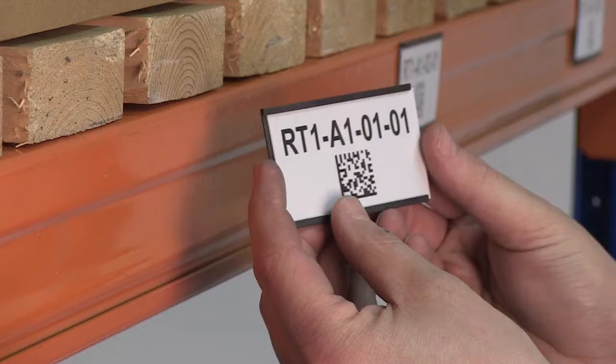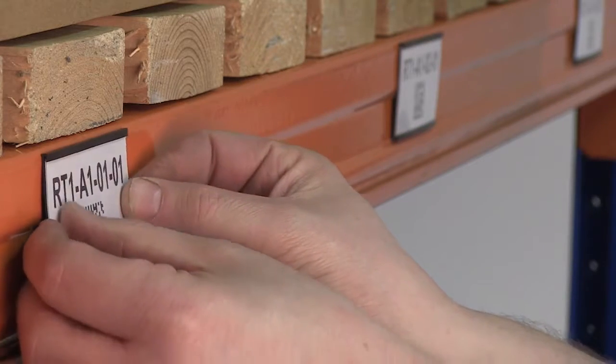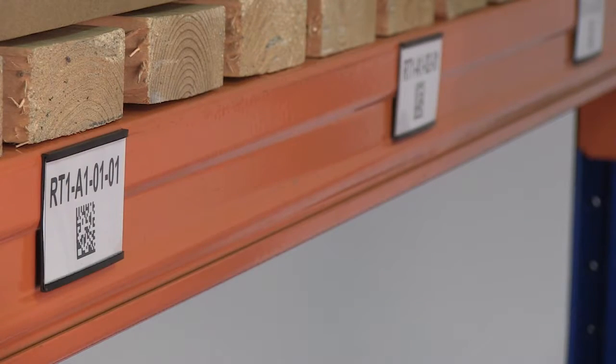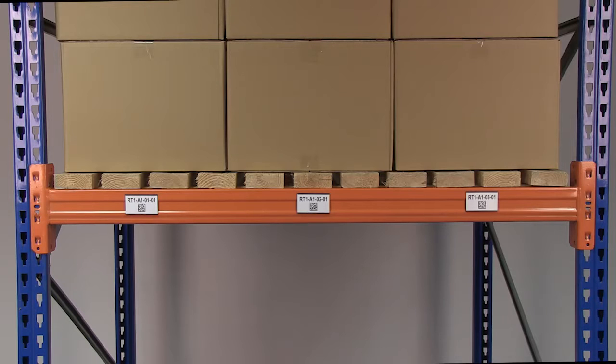All label holders are supplied with white card inserts and a PVC cover strip. Pre-printed inserts can be supplied which incorporate barcodes and location codes.